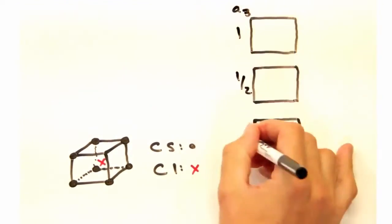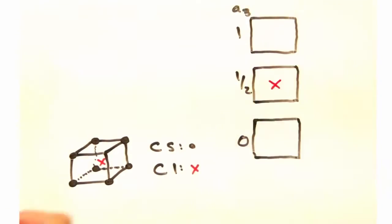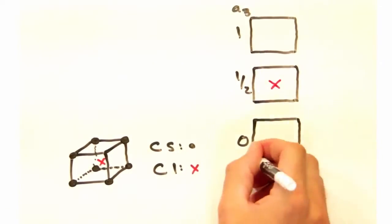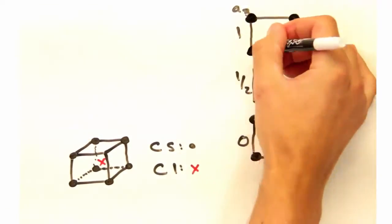Since cesium chloride is cubic, each cross-section is going to be a square. And once we have those, let's decorate those with atoms as so.